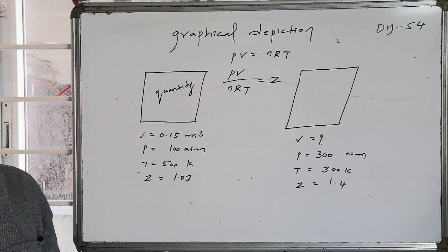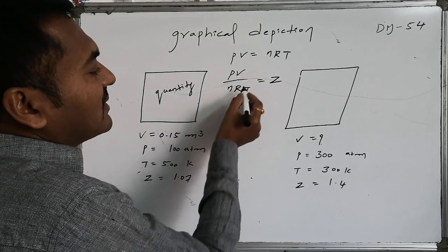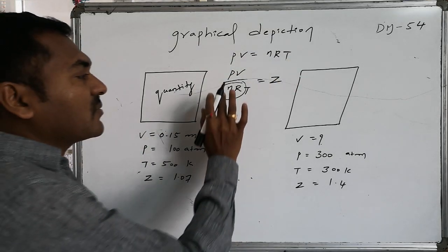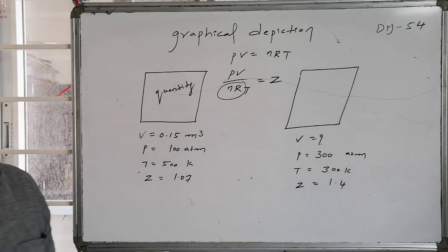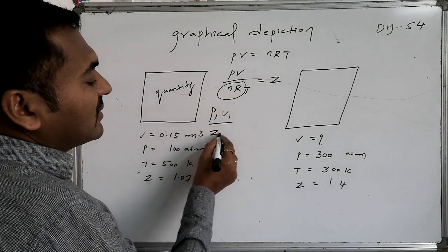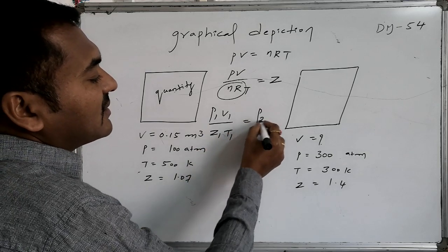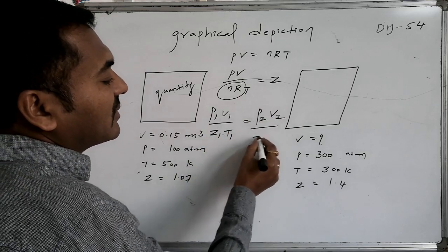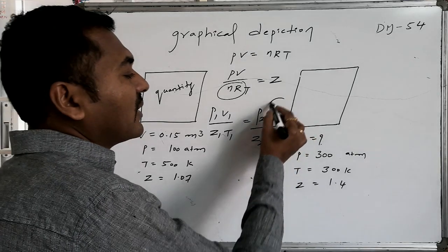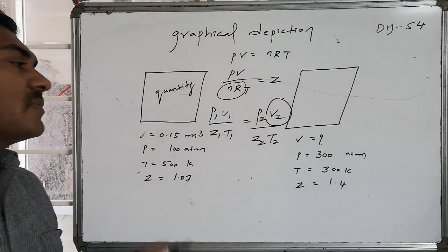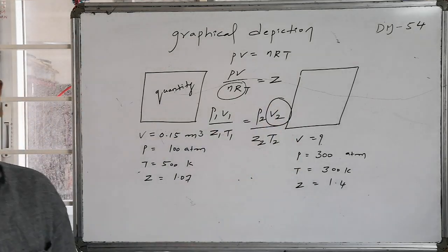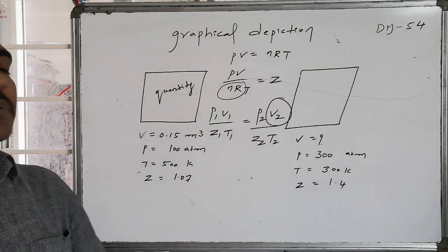In these first and second cases, two things remain constant as per this equation: one is number of moles and second one is the ideal gas constant. So therefore, first instance P₁V₁ by Z₁T₁ should become equal to second instant, that is P₂V₂ by Z₂ followed by T₂. By equating these things we will know the final parameter, that is final volume, because we are left with only V₂. We know P₁, V₁, Z₁, T₁, P₂, Z₂, followed by T₂.